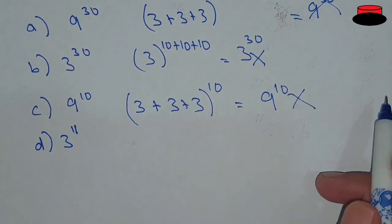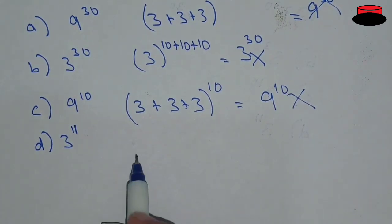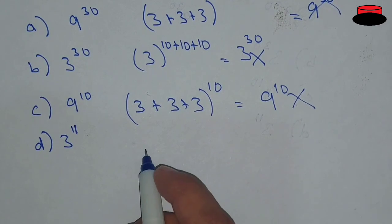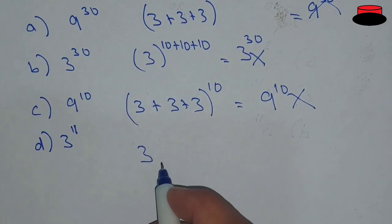Again, this is wrong as well. It will not be solved this way. So the only option left is 3^11.